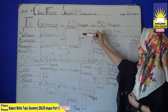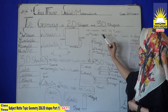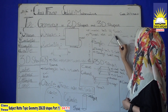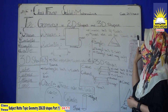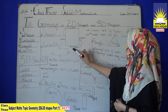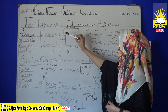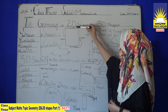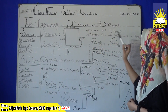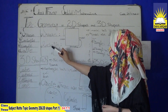This is the square shape. A square has 4 sides and all sides are the same in length. This length is 2 inches, this also 2 inches, this also 2 inches, and this also 2 inches. All the sides are equal in length — this is called a square.